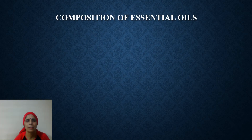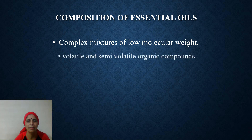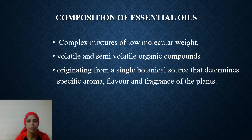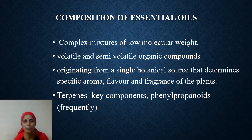Now let us talk about the composition of essential oils. They are complex mixtures of low molecular weight volatile and semi-volatile organic compounds originating from a single botanical source that determine the specific aroma, flavor, and fragrance of the plants. Terpenes are the key components. Polyphenides and propionides frequently occur along with terpenes in some families.